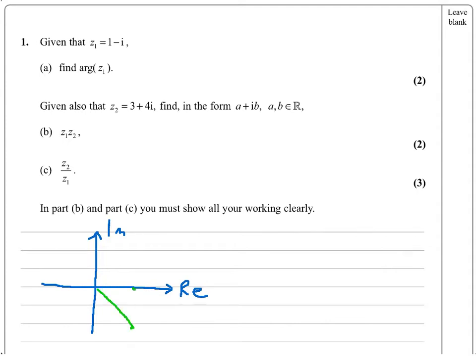and the imaginary component on the vertical axis. So the point 1 minus i is 1 across and 1 down. So there we have it, and the argument is the angle made with the line. Now, we can see there that we have a right-angled triangle.